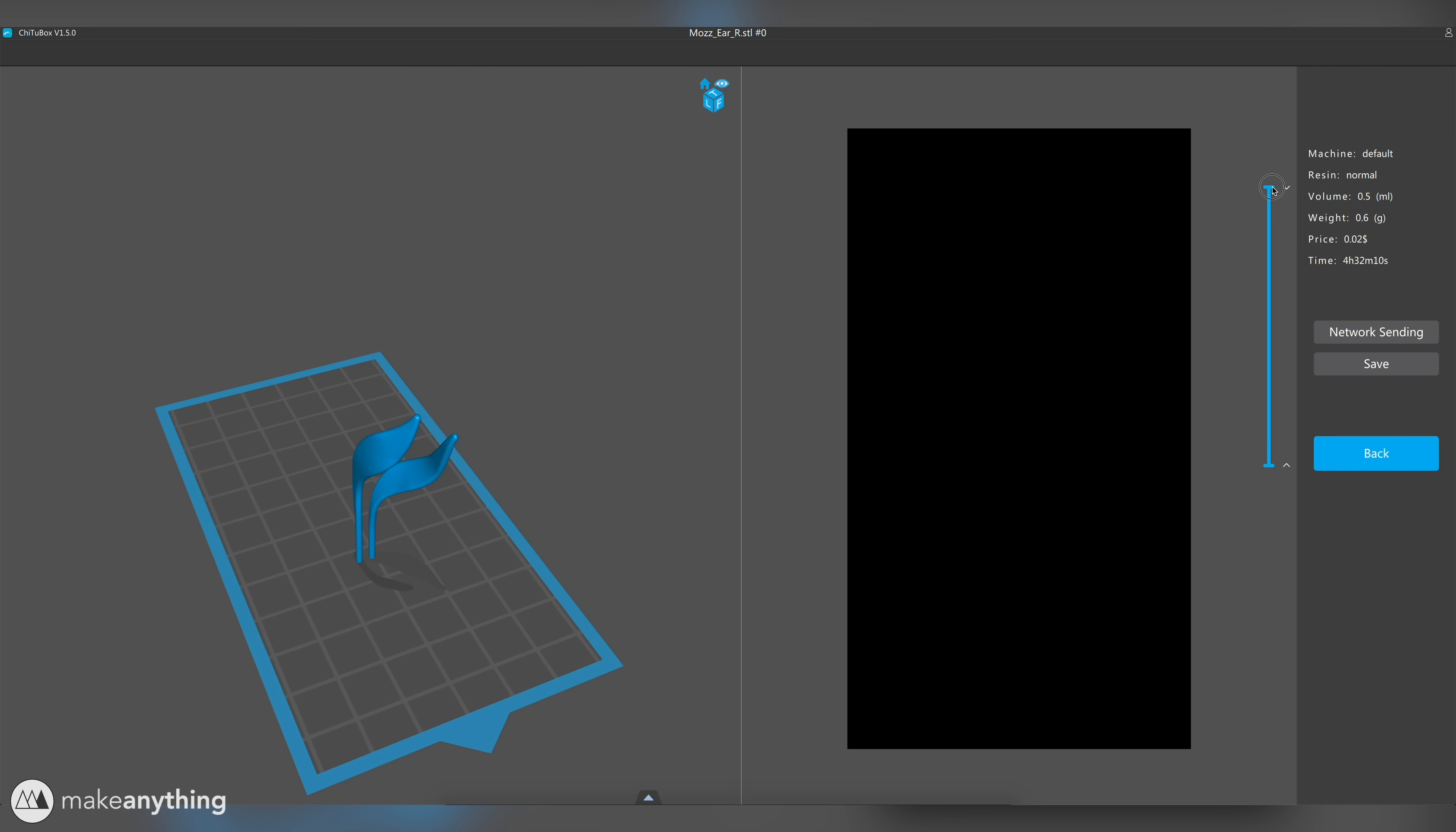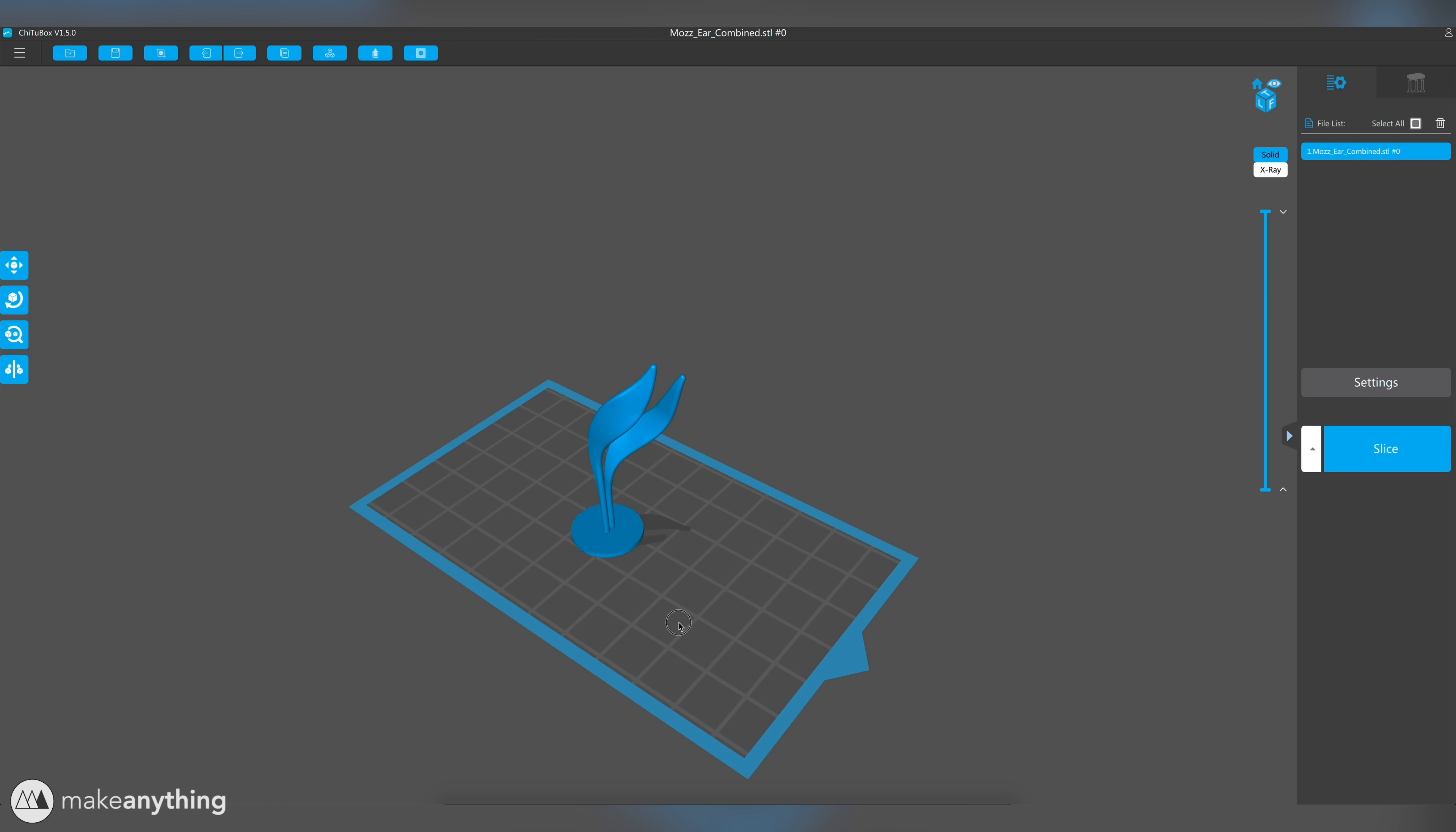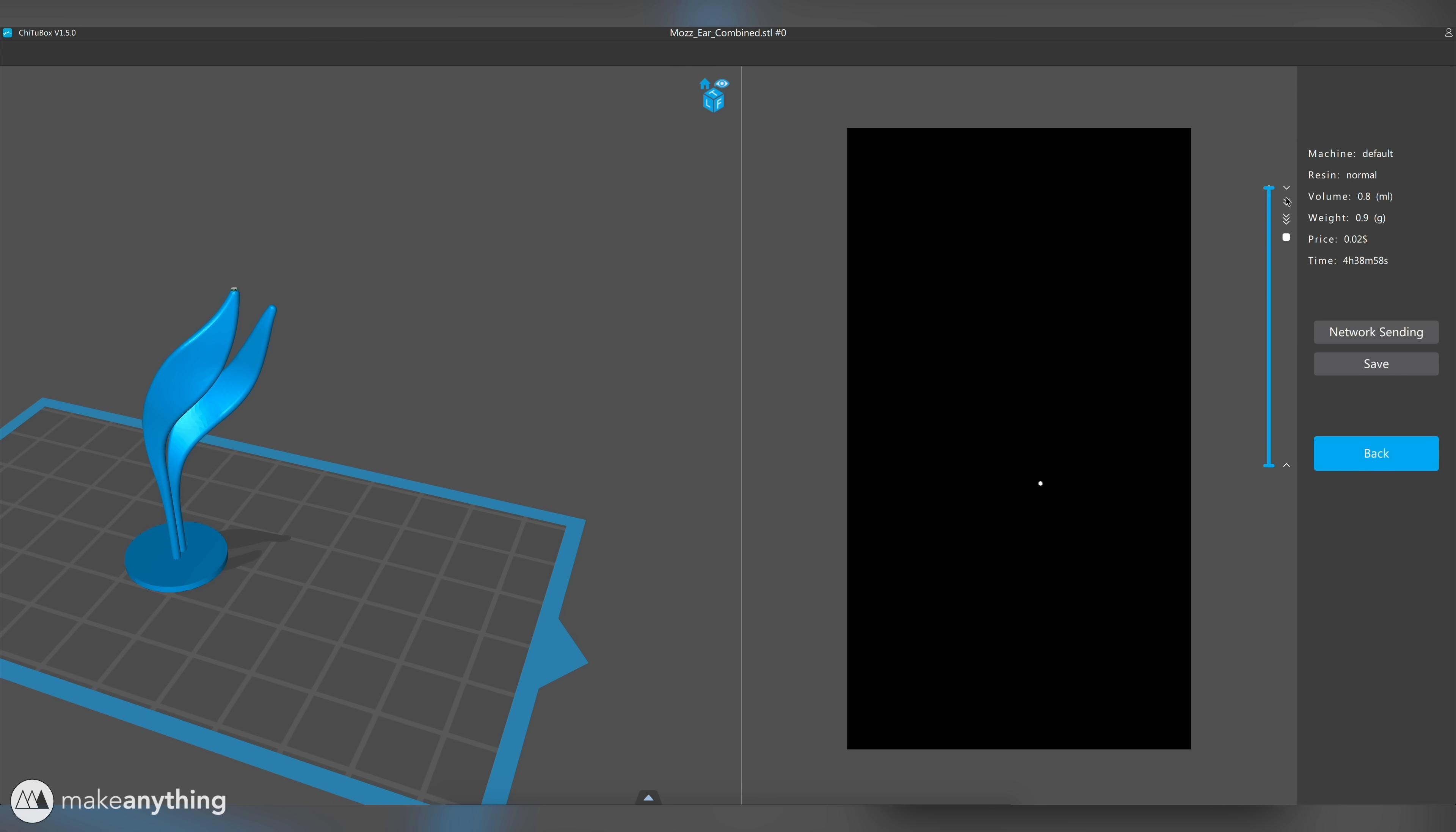Before starting our second print I decided to go ahead and make some changes in Chitu box which is the slicer that we're using to prepare our models for the Elegoo Mars. As you can see the two ears here start from these little tiny points on the build plate and I had a hunch that that's the reason that the prints didn't stick. One quick fix is to add a raft like this which creates more surface area at the beginning of the print and should help adhere the print to the build plate.